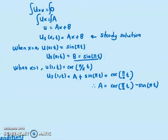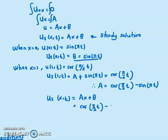Now we plug these into the steady state equation. We have u_s(x,t) = ax + b, which is [cos(π/2 · t) − sin(πt)]·x + sin(πt). This is the steady state solution.